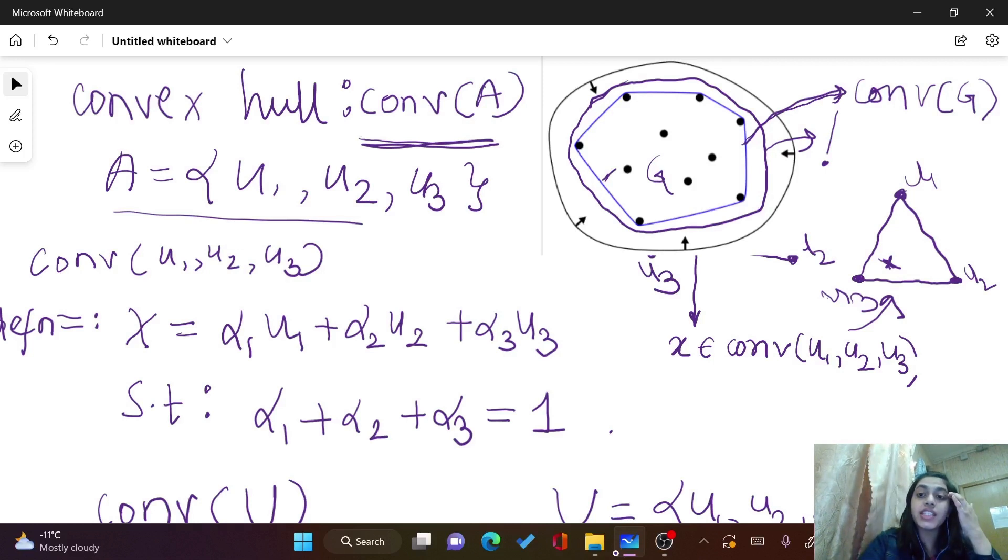And so this is the minimum one, right? You can draw this one. This is also a convex set that covers all the points, but there exists a minimum one and that is going to be our convex hull.